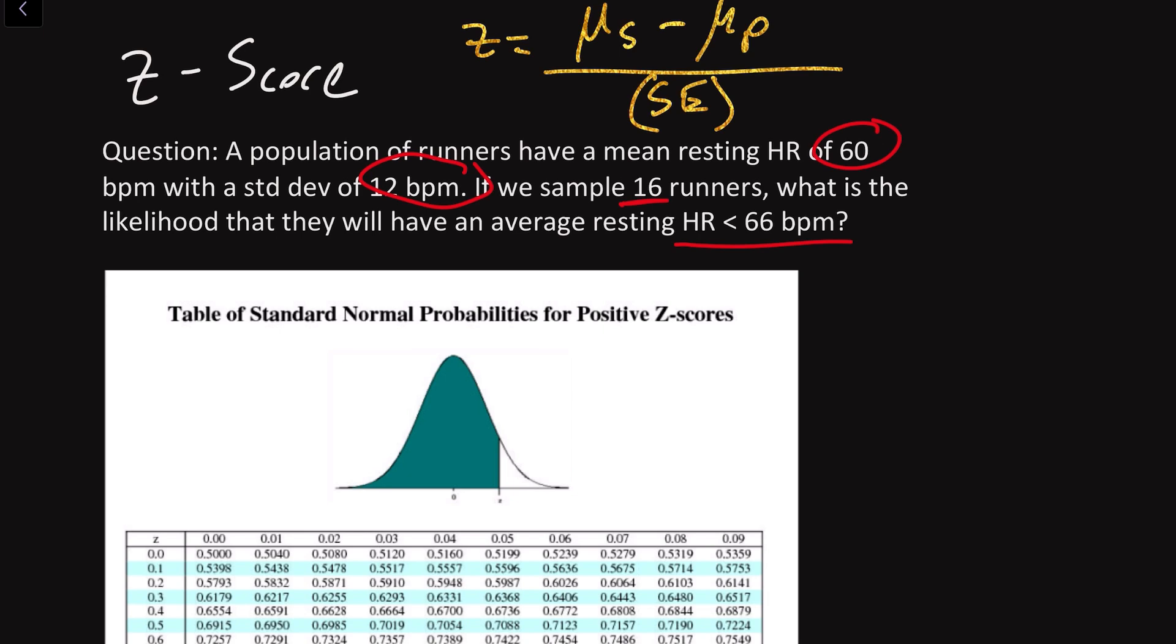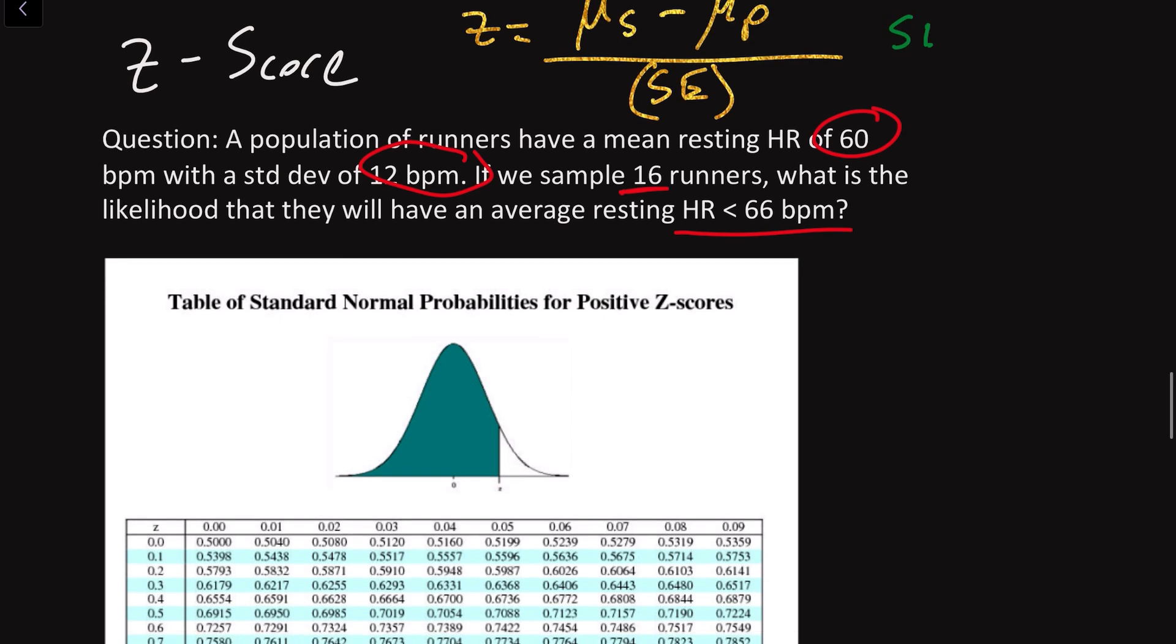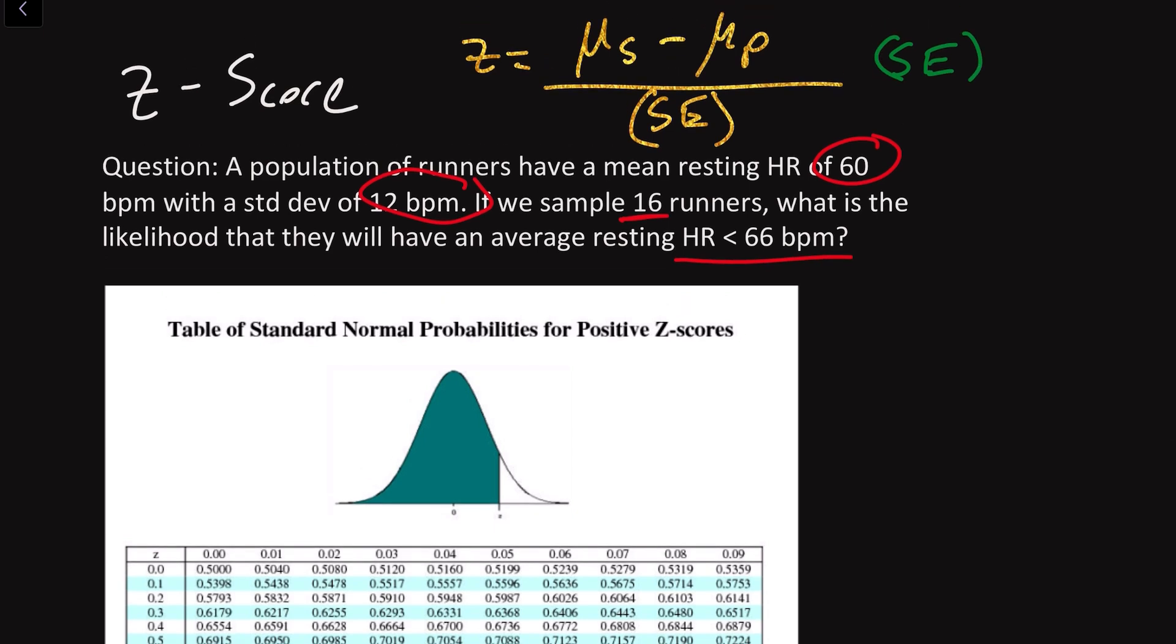What is that standard error term? Standard error is equivalent to the standard deviation of your population divided by the square root of the sample size of your sample. How many people did you look at?